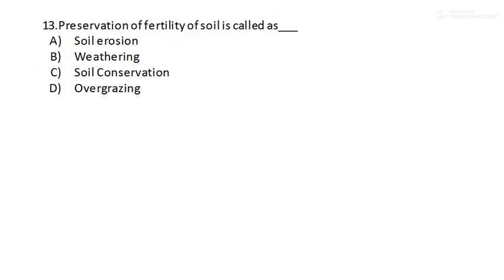Next is question number 13. Preservation of fertility of soil is called as blank. Preservation of fertility of soil, what do we call it as? We call it as soil conservation. Option number C is the correct answer. You should also remember the measures for soil conservation.